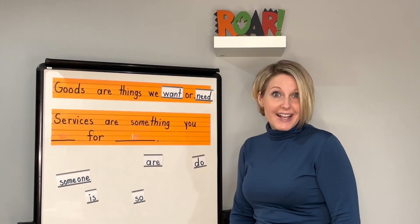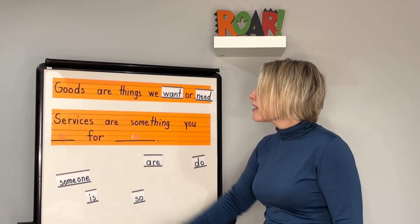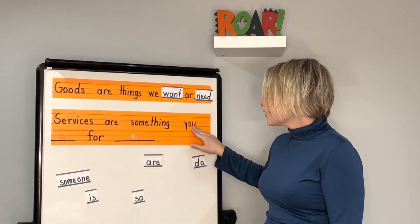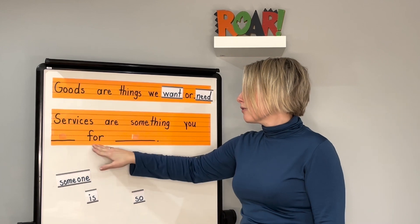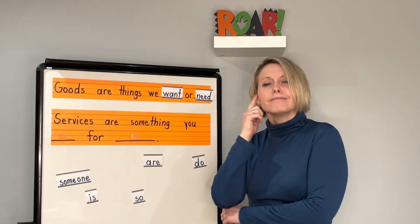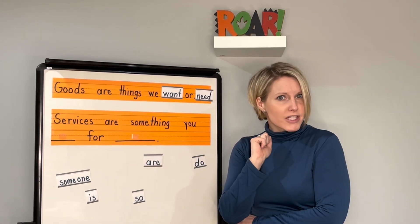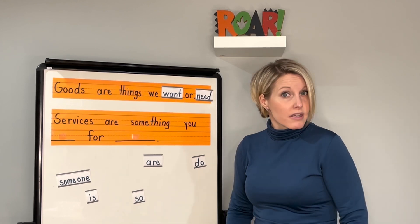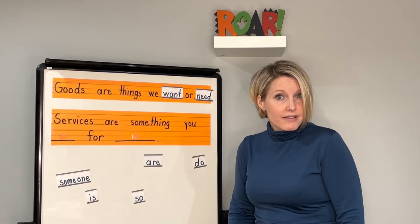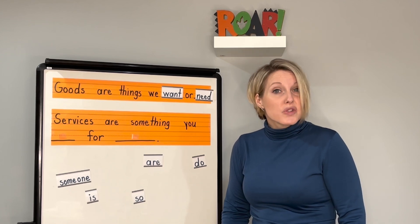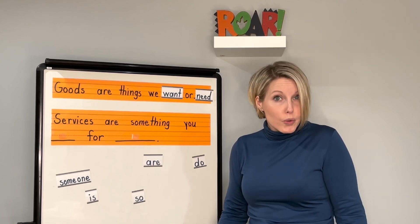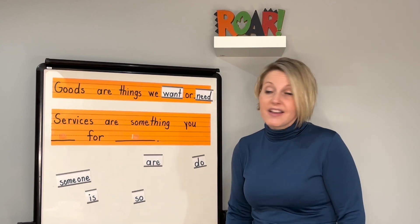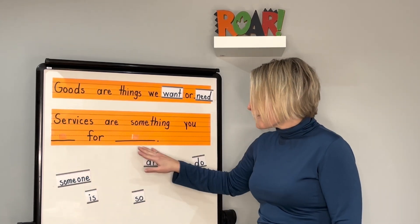Let's go to our next sentence. Our next sentence says, "Services are something you blank for blank." Let's think back to our book. What did our book say about services? Do you remember? That's right — services are something you do for someone. We need to find two words: do and someone.